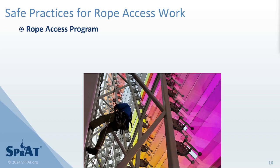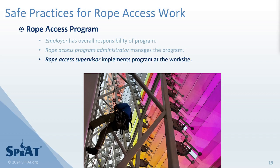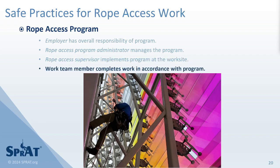Sections 2 through 5 also address the responsibilities of personnel within the rope access program, including the employer, who has overall responsibility of the program; the rope access program administrator, appointed by the employer, who manages the program; a rope access supervisor, designated by the employer, who implements the program at the worksite; and the work team member, who completes work in accordance with the program.